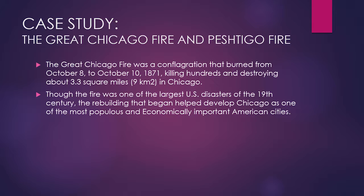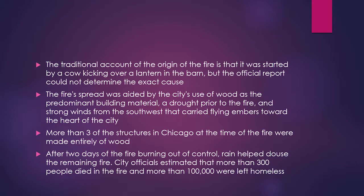Though the fire was one of the largest U.S. disasters of the 19th century, the rebuilding that followed helped develop Chicago into one of the most populous and economically important American cities. The traditional account of the fire's origin is that it was started by a cow kicking over a lantern in a barn, but the official report could not determine the exact cause. The fire's spread was aided by wood as the predominant building material, a prior drought, and strong winds from the southwest that carried flying embers toward the heart of the city. More than two-thirds of the structures in Chicago at the time were made entirely of wood.